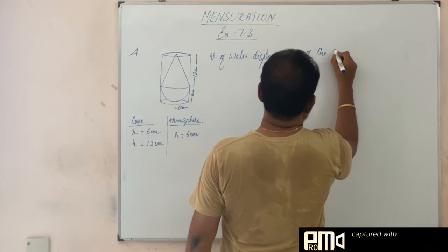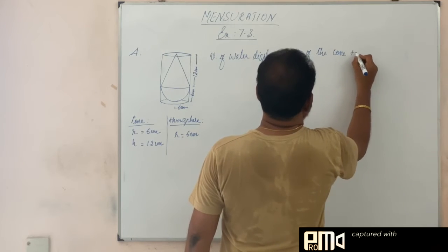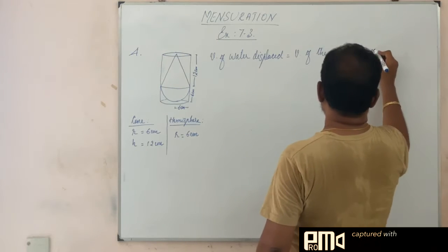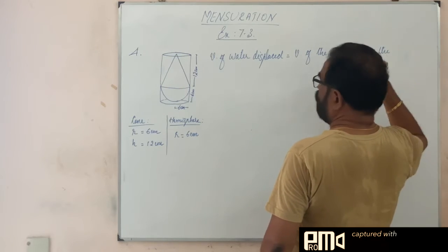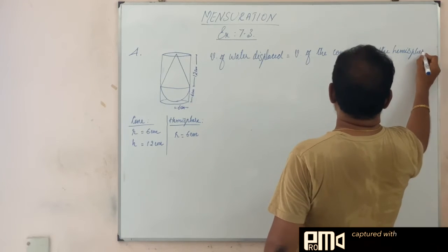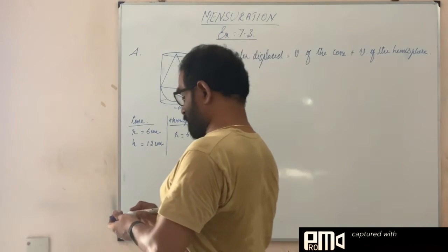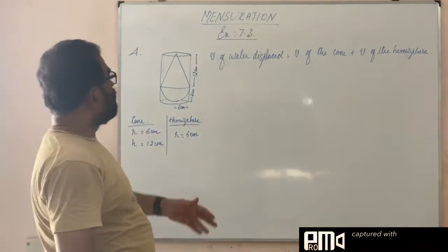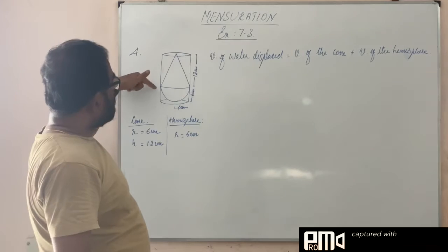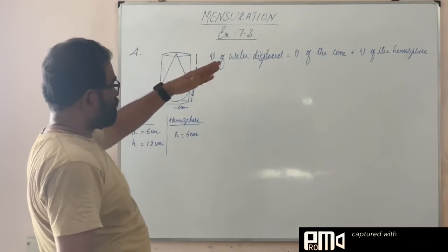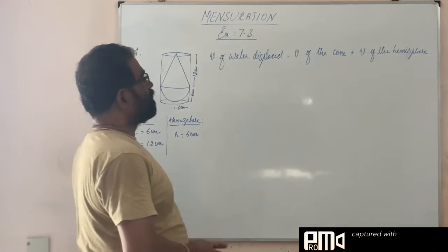So volume of water in the shape of cylinder, so volume of the cone plus volume of the hemisphere. So this is kept immersed here. So the amount of water displaced is equal to the volume of the material immersed. What is the material immersed? Cone plus the hemisphere. So it is all is equal.